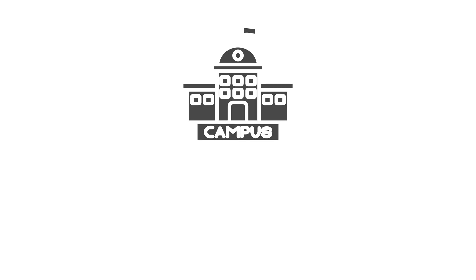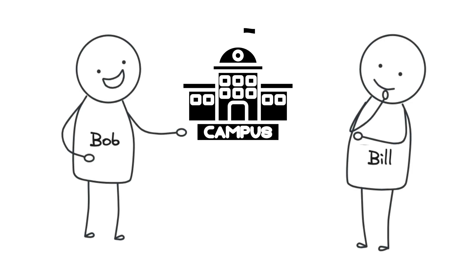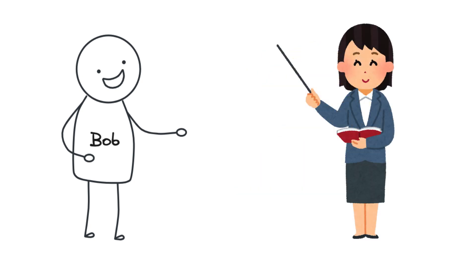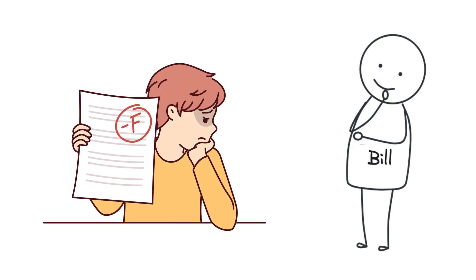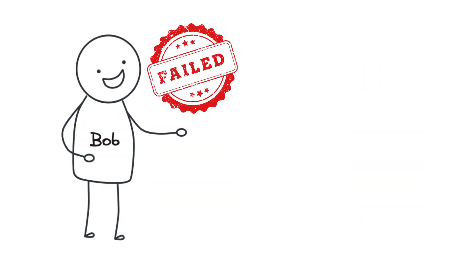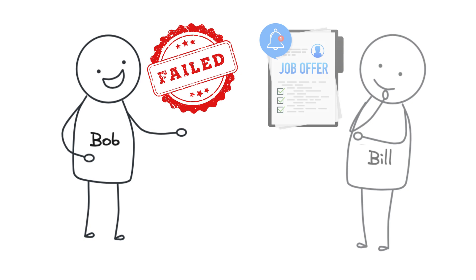Once upon a time, there were two engineering students, Bob and Bill. Bob was the class topper and the favorite student of every teacher, while Bill scored average grades. Yet Bob failed the system design job interview round, and Bill passed it. This video outlines the best tips to fail the system design interview, and this is Bob's story. Here are 7 reasons why Bob failed the system design interview.